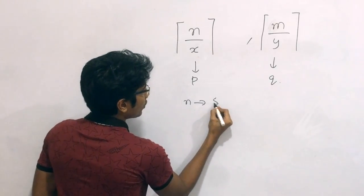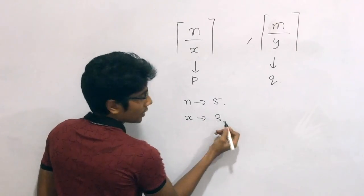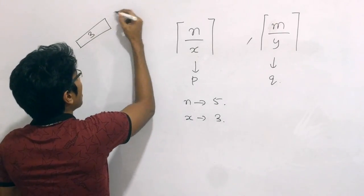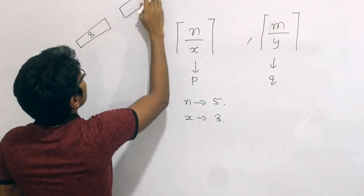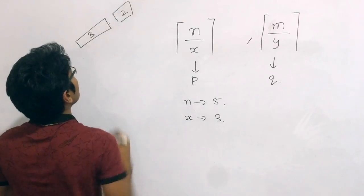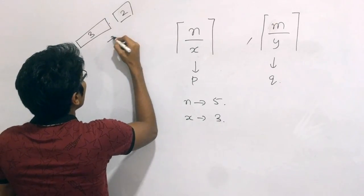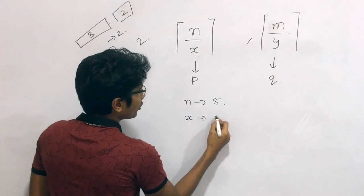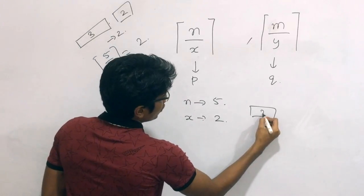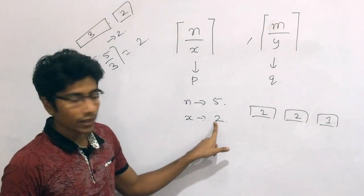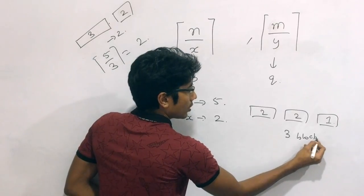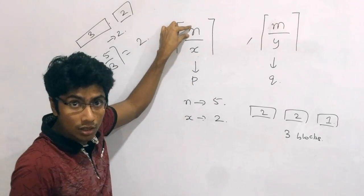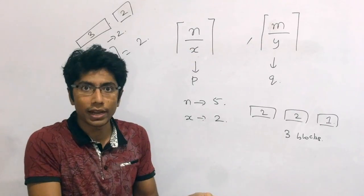For example, take N=5 and X=3: the first block is of size 3 and the second block is of size 2, giving two blocks — which equals ceiling(5/3) = 2. Another example: X=2 gives three blocks of sizes 2, 2, and 1. Again ceiling(5/2) = 3. So the minimum number of blocks needed for a fruit equals the number of times it occurs divided by the maximum contiguous amount allowed.